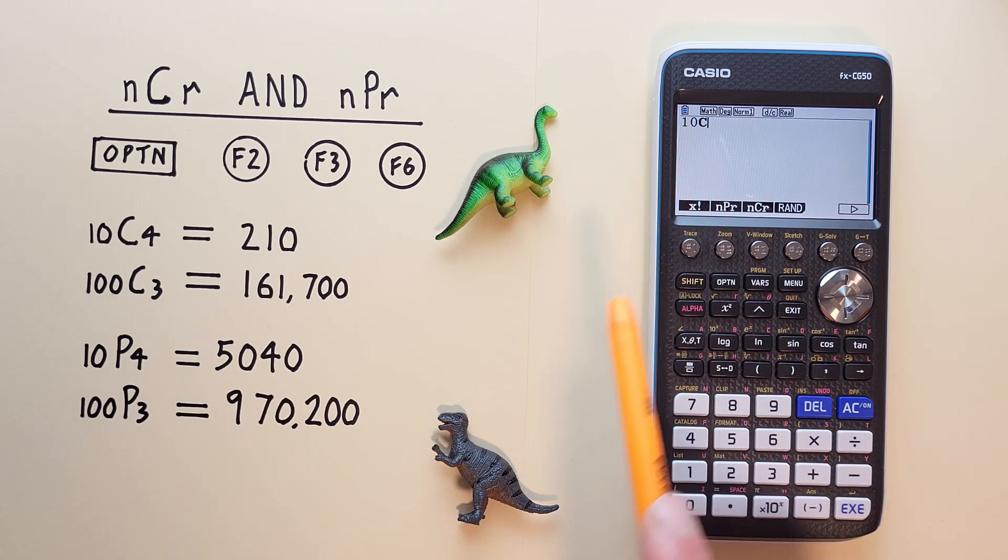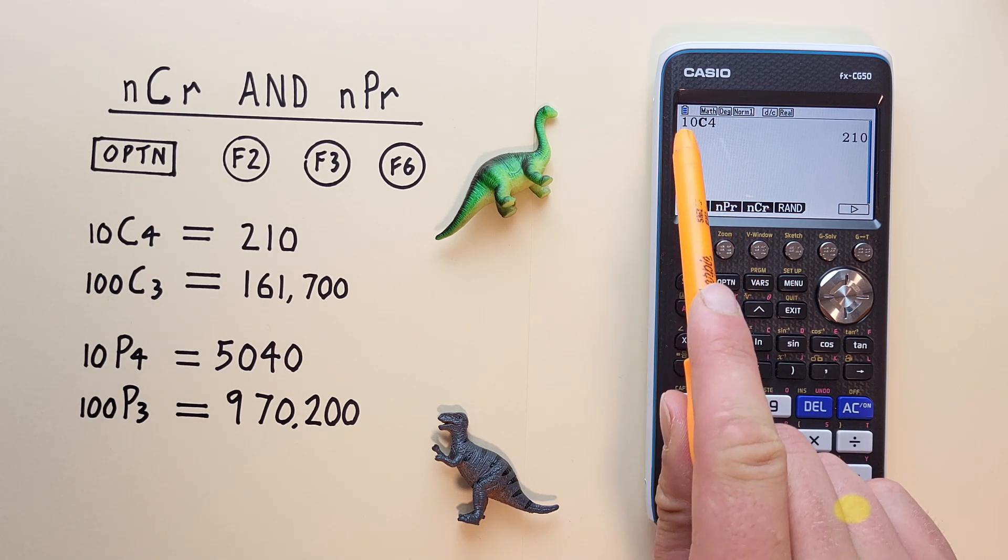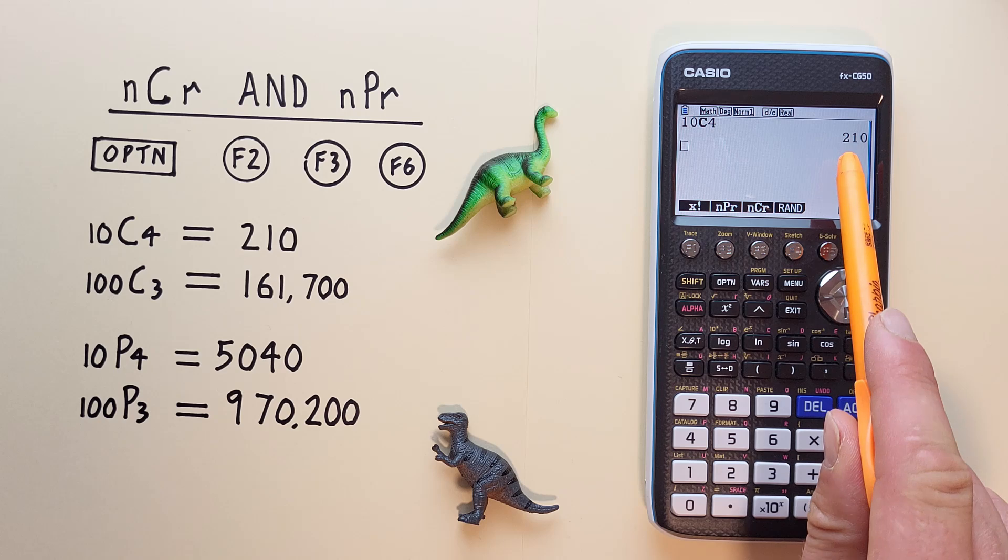Now we see 10 choose, and we're choosing 4 objects, so we hit the 4 and hit EXE, and we see we get 10 choose 4 is equal to 210.